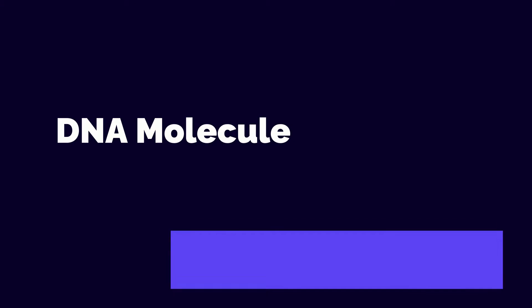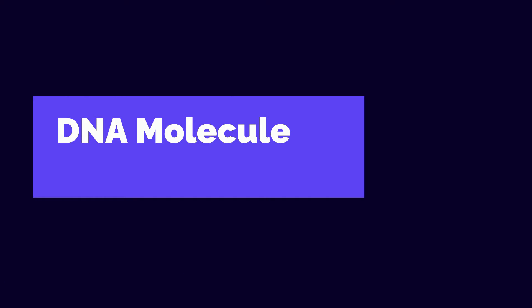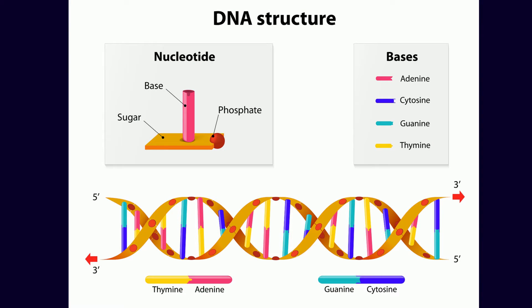The DNA molecule is made up of four different types of nucleotides arranged in base pairs. The base pairs of DNA are the building blocks of the genetic code. They are composed of two nucleotides, each of which contains a nitrogen-containing base and a sugar-phosphate backbone.